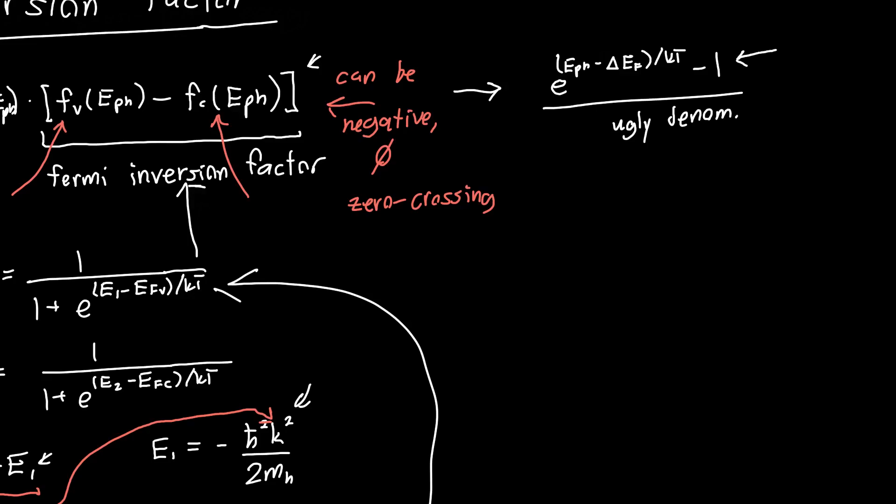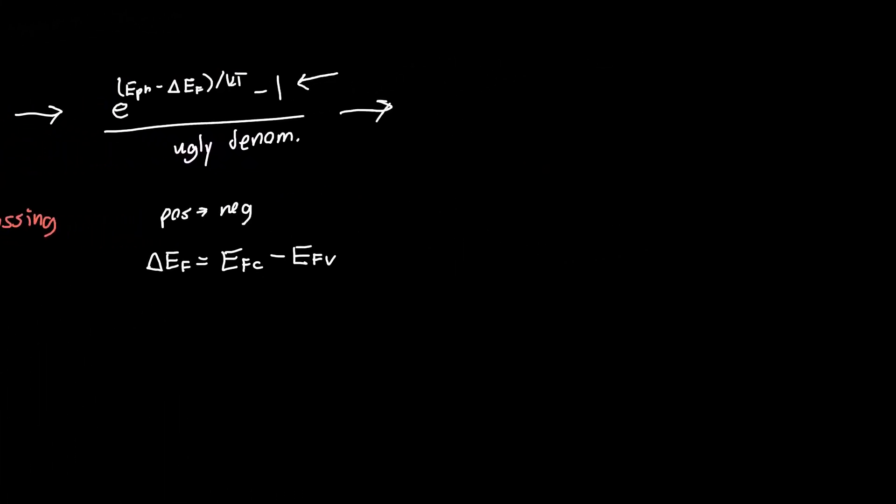Delta EF is defined as our conduction band quasi-Fermi level minus our valence band quasi-Fermi level. If we take a closer look at this, let's say we want to plot this as a function of our photon energy. Initially, what will this numerator be? Let's assume that ΔEF is going to be positive. In general, it's going to be either 0 or positive. If our photon energy was 0, we have e to the minus ΔEF/kT, or e to the minus a positive number. This is going to be less than 1, minus 1. So this whole quantity is going to be negative.